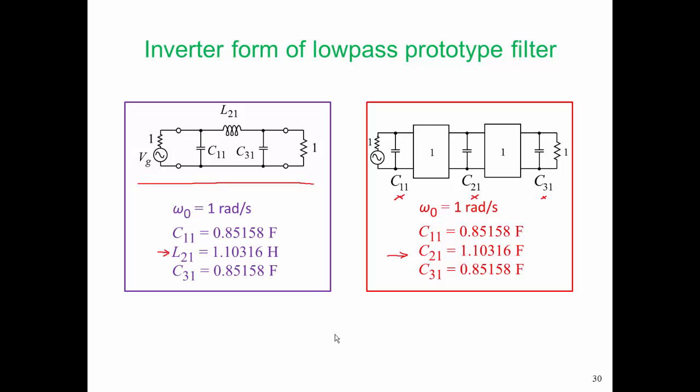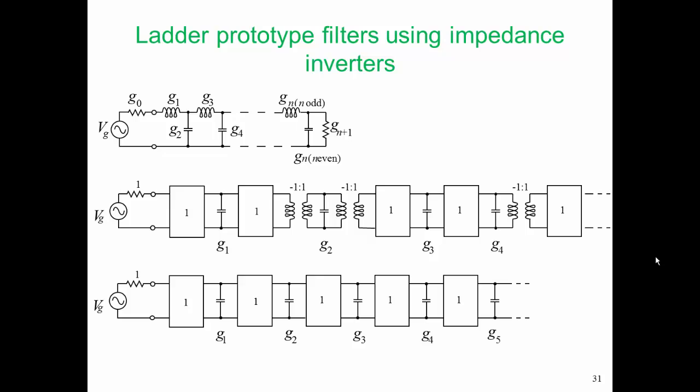We have two low-pass prototype filters here, one on the left and one on the right. The low-pass prototype filter on the right has inverters. Now we could short circuit things a little bit here. On the top here is shown our generic Chebyshev filter with G values.